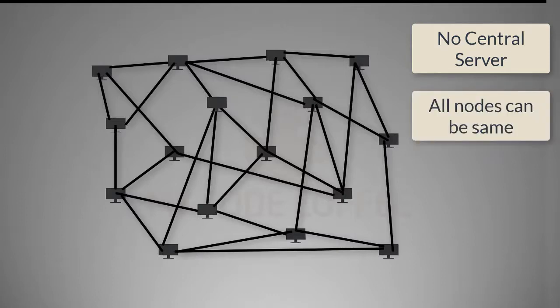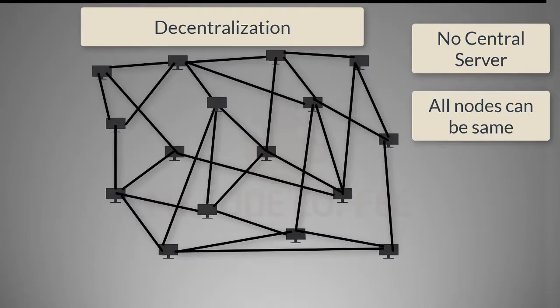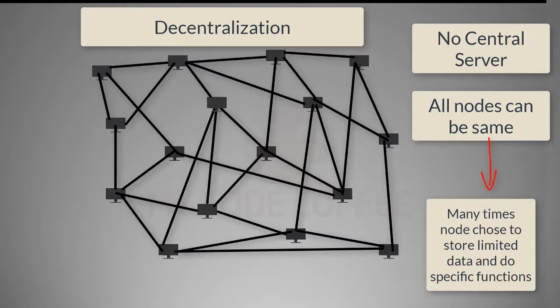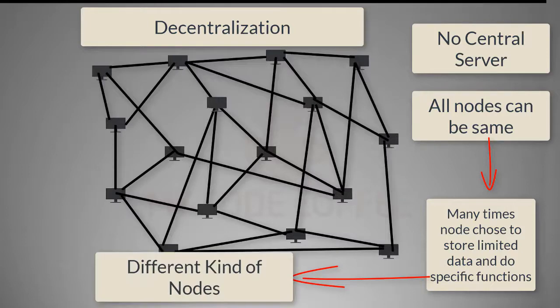In other words, they are equally capable. We must understand that the core of blockchain technology is decentralization, so it is no surprise that Bitcoin network has this flat peer-to-peer architecture. Now, when I say that all nodes in Bitcoin network are equal, it does not mean that all nodes must be equal and the same. All it means is that if a node wants to perform all functions and store all data, it can. But many times, nodes choose to do specific functions and store certain data instead. That's the reason we see different kinds of nodes in the Bitcoin network — they choose to have only certain features, not because the network does not allow them to have all features.